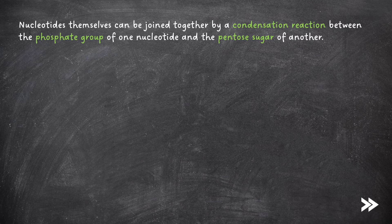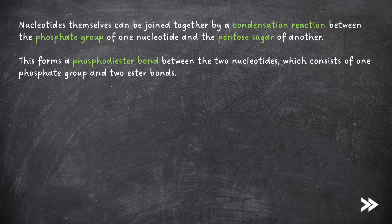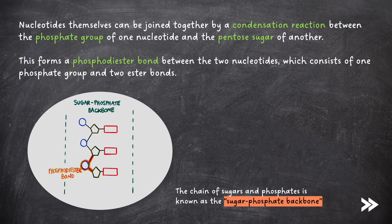Nucleotides themselves can be joined together by condensation reactions between the phosphate group of one nucleotide and the pentose sugar of another. This forms a phosphodiester bond between the two nucleotides, which consists of one phosphate group and two ester bonds. The chain of sugars and phosphates is known as the sugar-phosphate backbone.